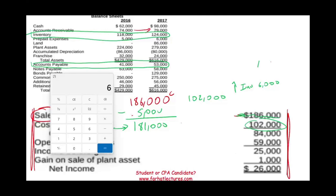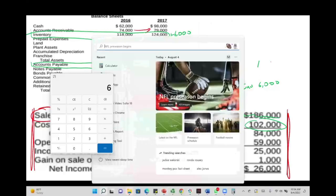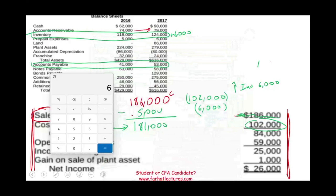What does it mean if my inventory went up by 6,000? It means I am buying more inventory than I am selling. Overall I have an additional 6,000 of inventory — it went from 118 to 124. Cost of sales is a cash outflow because it's a cost. If I bought an additional 6,000 of inventory, from a cash basis I spent an additional 6,000 on inventory. The opposite would have been true if my inventory had gone down.